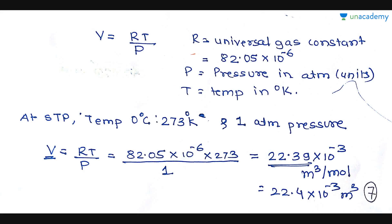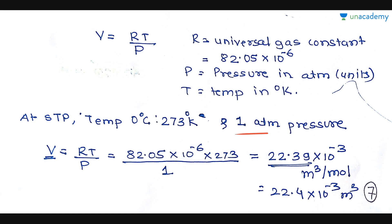Here R is the universal gas constant, equal to 82.05 × 10⁻⁶. P is pressure in atmospheres and T is temperature in Kelvin. At standard temperature and pressure — 0°C (273 K) and 1 atmosphere — V = RT/P = 82.05 × 10⁻⁶ × 273 / 1, which gives approximately 22.4 × 10⁻³ meter cube.